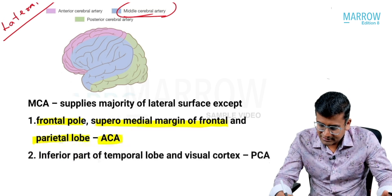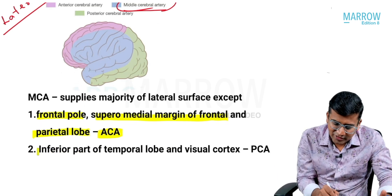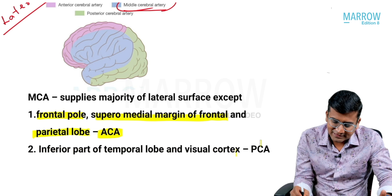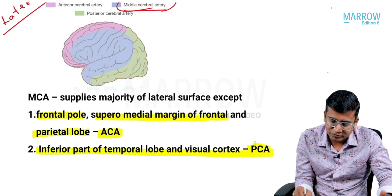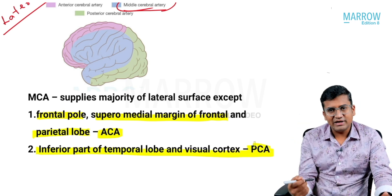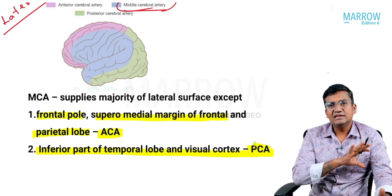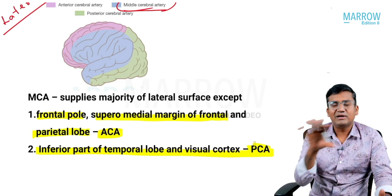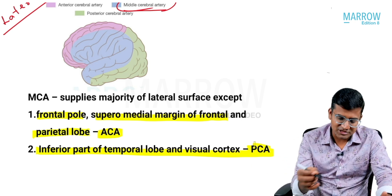The inferior part of the temporal lobe and the visual cortex are supplied by the posterior cerebral artery. Except these two areas, the remaining area on the lateral part of the cerebrum is supplied by the middle cerebral artery.